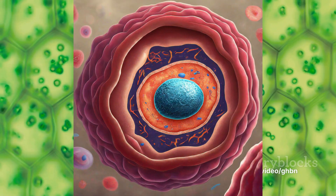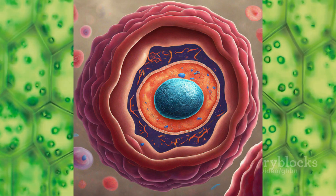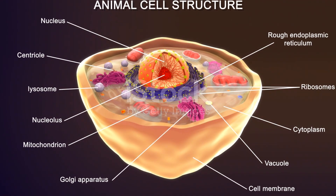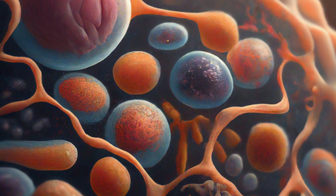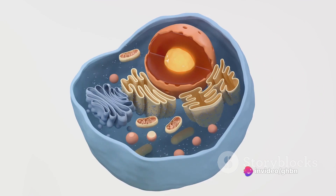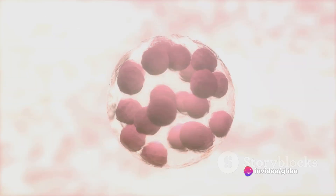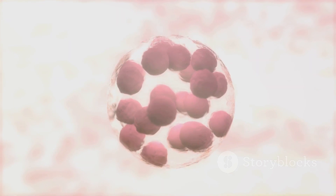Imagine a cell as a city — the cytoplasm would be the ground, the streets, the air. It's essentially the space where everything happens. It's the fluid that fills the cell, giving it shape while providing a supportive environment for cellular components. It's an aqueous solution, composed mostly of water, but also packed with proteins, sugars, fats, and other metabolic products.